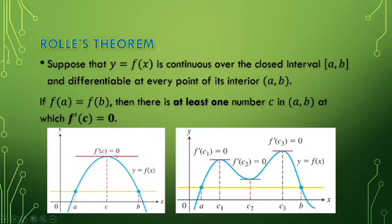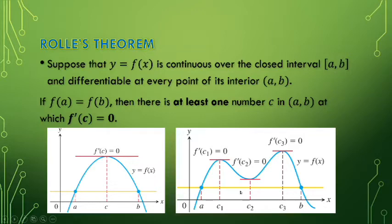then there is at least one number c on the open interval (a, b) at which the slope f'(c) is equal to 0, so the slope will be horizontal. So we have two points at the same height, and there is at least one — possibly multiple — points where the slope of the curve is 0.